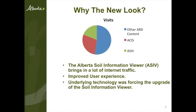So why do we have this new look viewer? One of the reasons is that it seems to be immensely popular with our clients. We have a chart where the entirety of the circle represents visits to our website. The blue is other Alberta Agriculture and Rural Development content, the red is our Agroclimatic Information Service, and the green area is the Alberta Soil Information Viewer — about a third of monthly visits to our site.